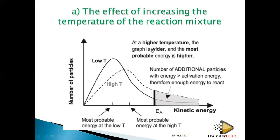At higher temperature, the graph is wider and the most probable energy is higher. The wider graph means more particles have enough energy to react — more particles have energy greater than the activation energy. At low temperature, this is where the most probable energy sits, and at high temperature the most probable energy shifts to a higher value.